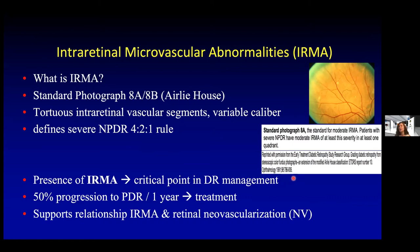These eyes need to be very carefully monitored. On occasion, you might even treat at this stage — for example, in someone who had a progressive course in their contralateral eye. It's a really important time for patient education and close follow-up. There might also be a relationship between IRMA and retinal neovascularization — do they arise from the same etiology? Further information is really needed on this.